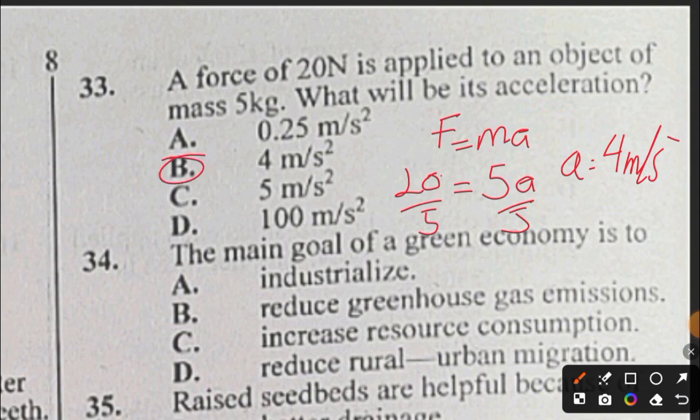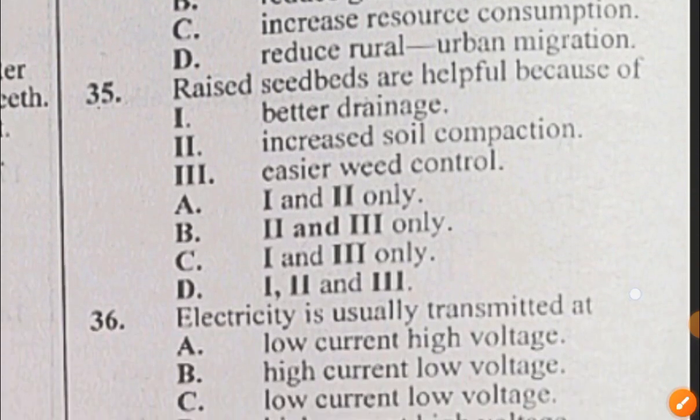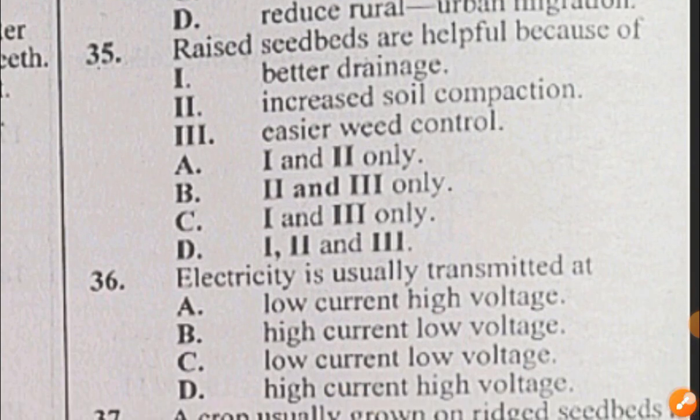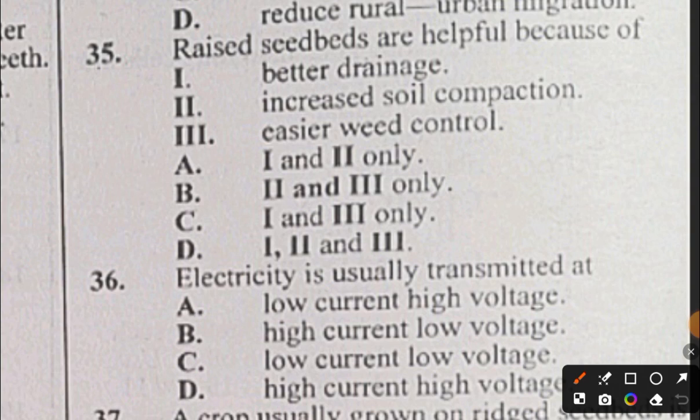Question 34: The main goal of a green economy is to: A) industrialize, B) reduce greenhouse gas emissions, C) increase resource consumption, D) reduce rural-urban migration. The answer to question 34 is B, reduce greenhouse gas emissions. Question 35: Raised seed beds are helpful because of: I) better drainage, II) increased soil compaction, III) easier weed control. Question 35 - I is true, II I don't know how it benefits, but III is also true. So the answer is C.